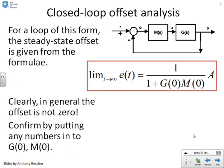What we'd like to do is generalize this a bit. So what we're saying is if you have a simple loop of this form with a compensator in the forward path followed by the process and just a 1 in the feedback path, you will often get an offset.